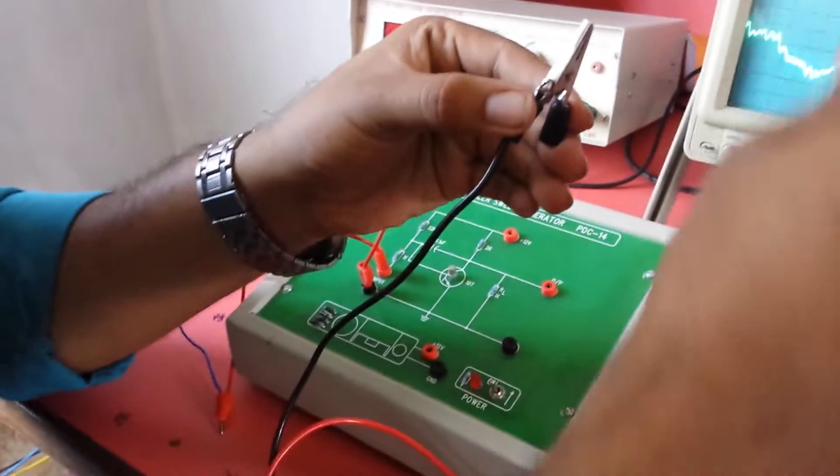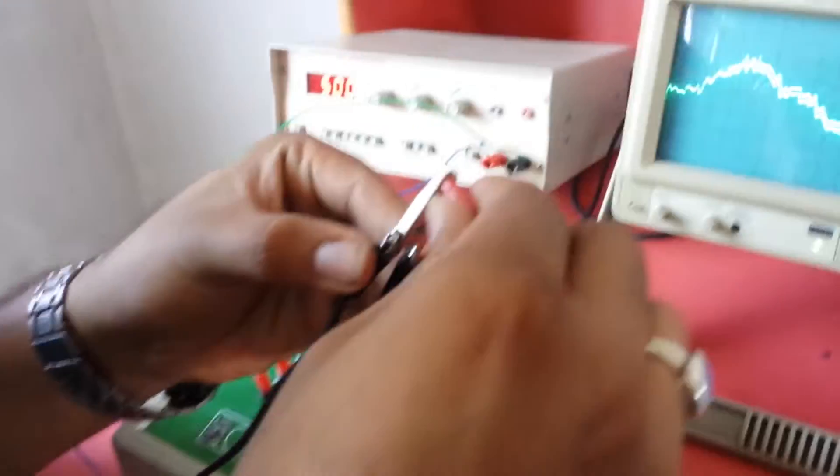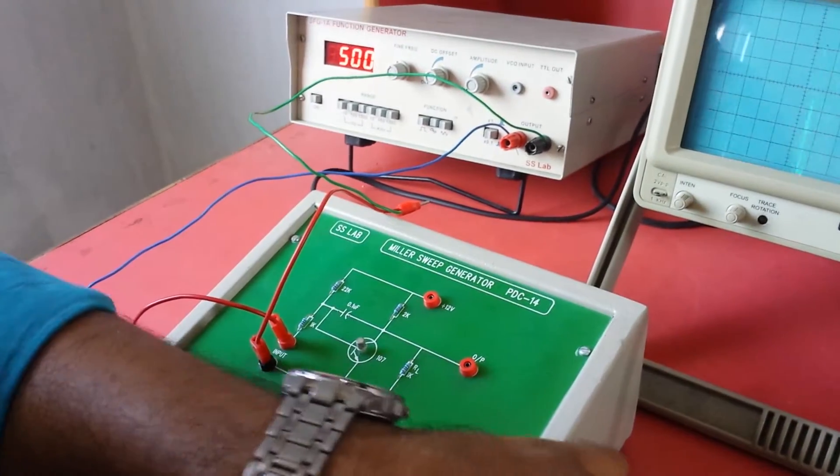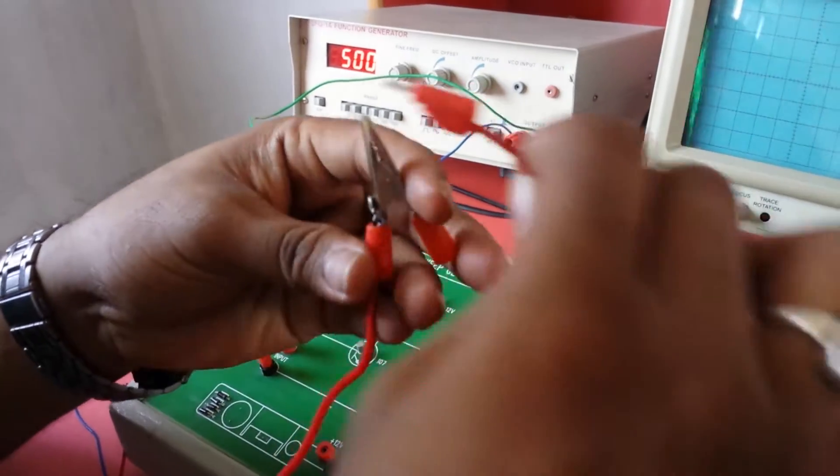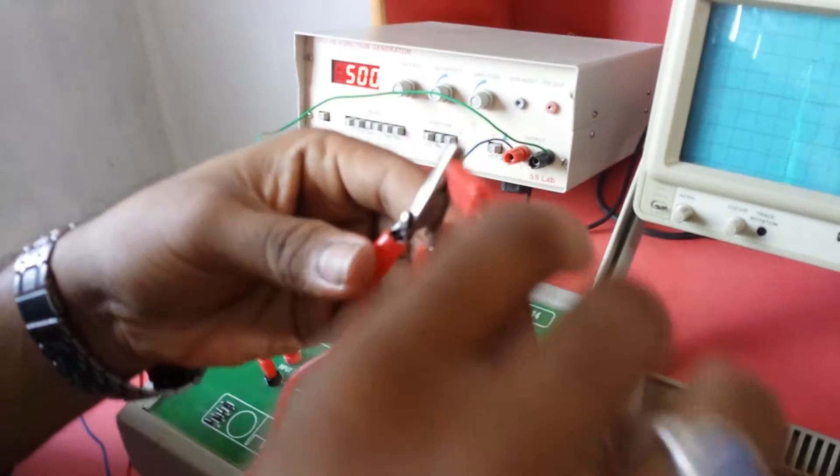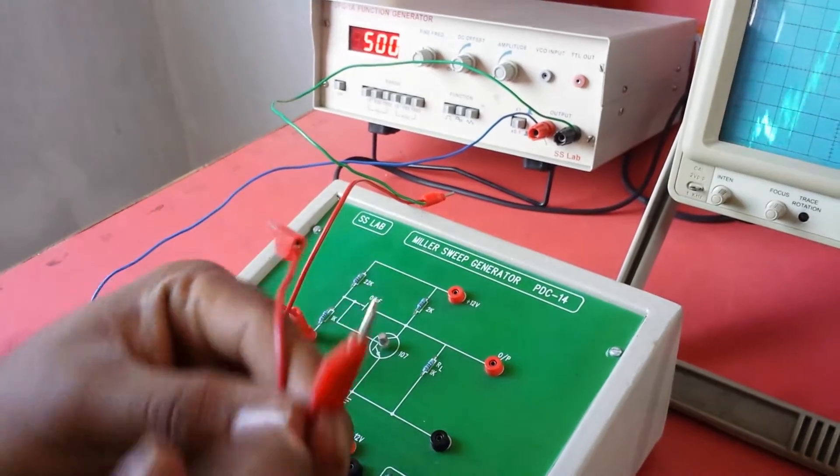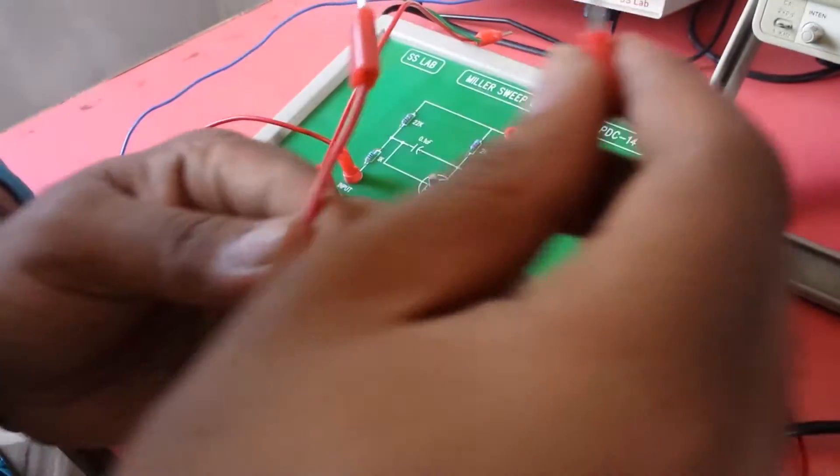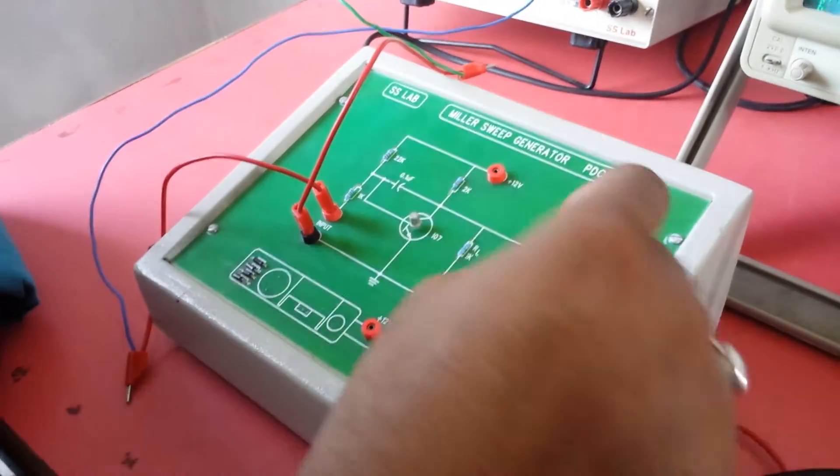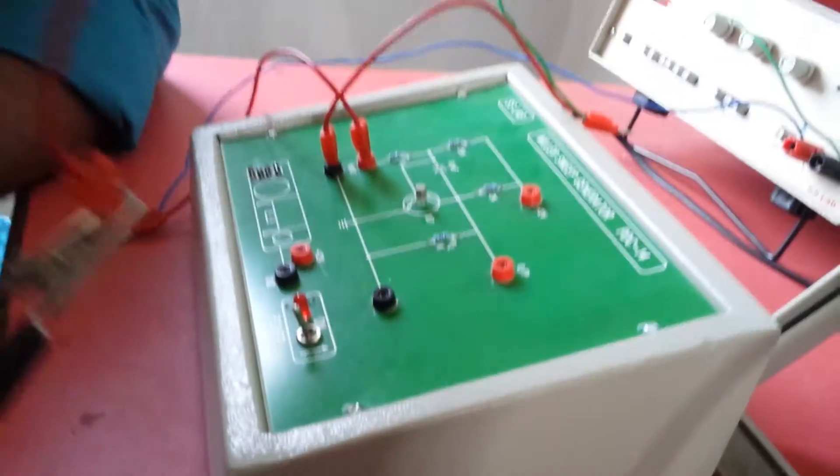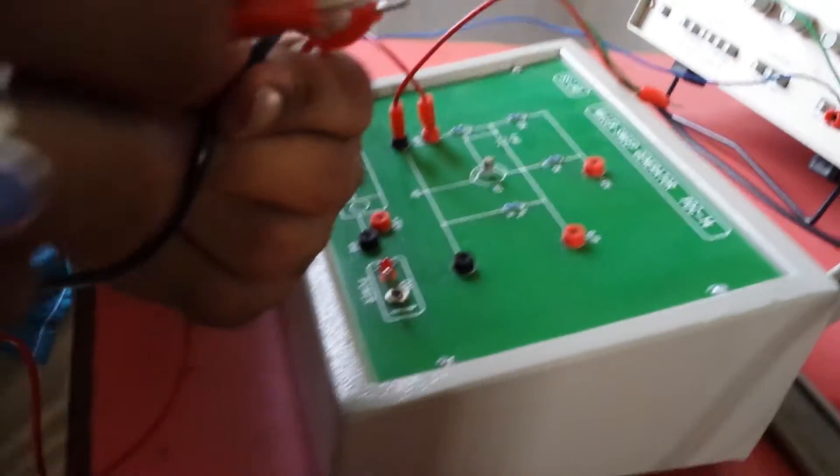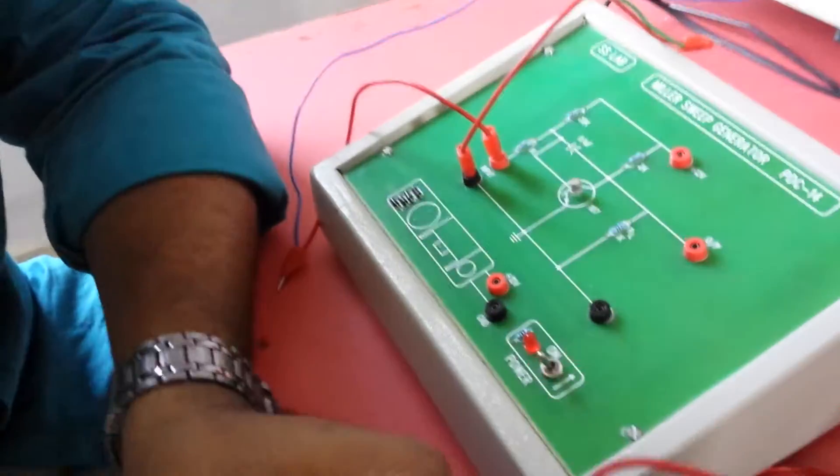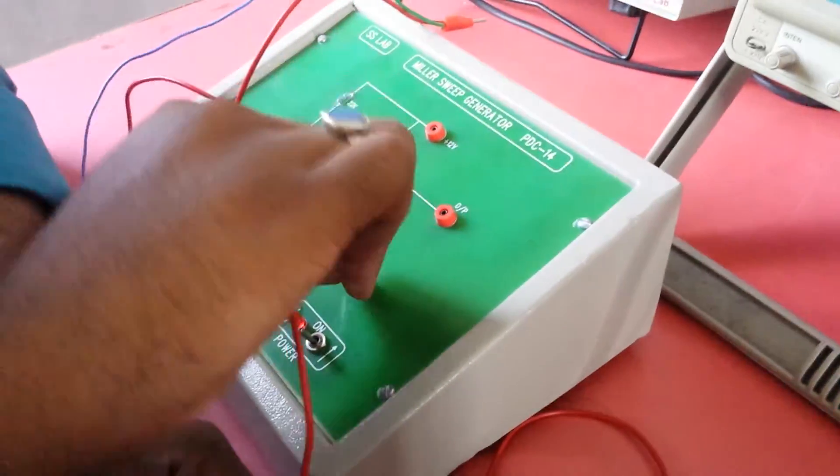Then this is a probe. One other wire is connected to the probe card, the other wire is connected to the probe card in the red color. Then what we gonna do, this is connected to the output of the Miller's sweep generator. You can see this is a black cord, okay. So you must be connected to the black color. Okay.